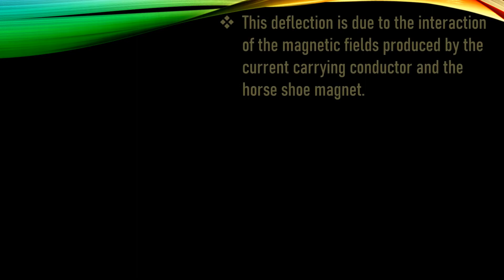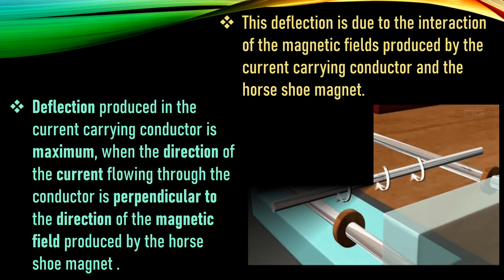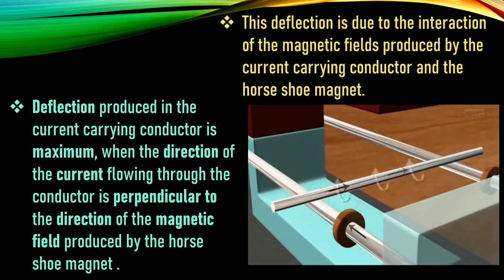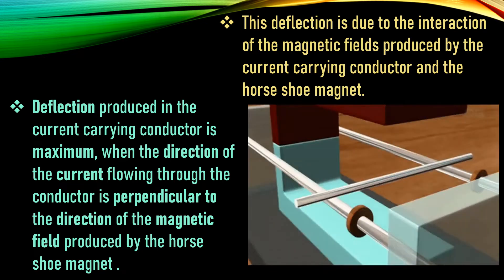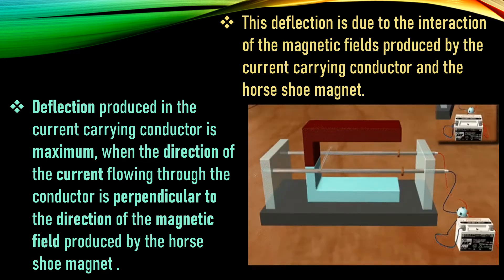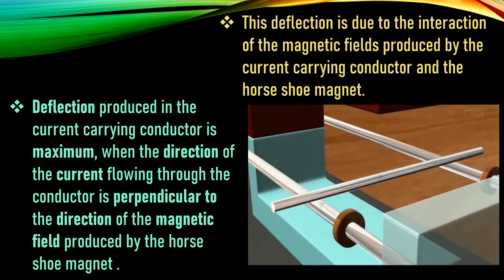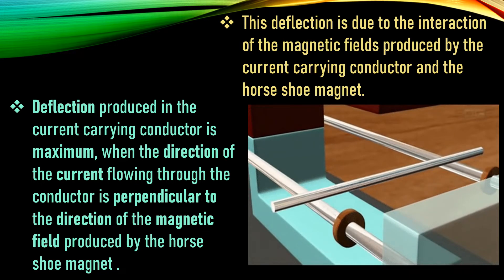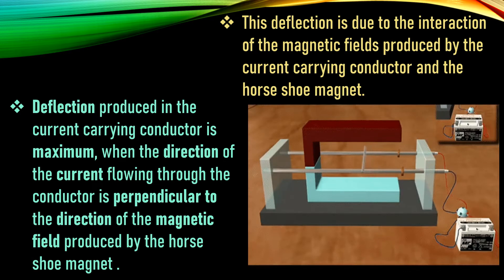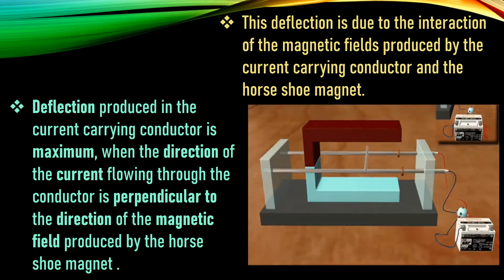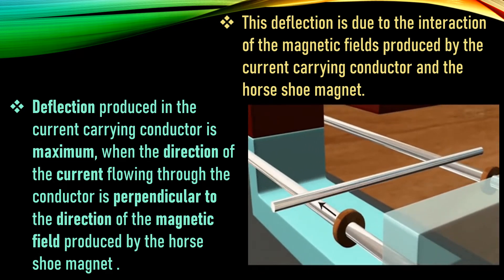From this activity, we understand how the rod is deflecting. The deflection is due to the interaction of the magnetic fields produced by the current carrying conductor and the horseshoe magnet. The horseshoe magnet is an artificial magnet having its own magnetic field directed from north to south outside the magnet. And whenever current flows through a conductor, a magnetic field is produced around it — here, around the aluminium rod.